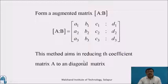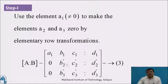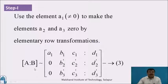This method aims at reducing the coefficient matrix A to a diagonal matrix. Step 1: use the element a1 (which is not equal to 0) to make elements a2 and a3 equal to 0 by elementary row transformation. The augmented matrix A|b becomes equivalent to [a1, b1, c1, d1; 0, b2', c2', d2'; 0, b3', c3', d3'].